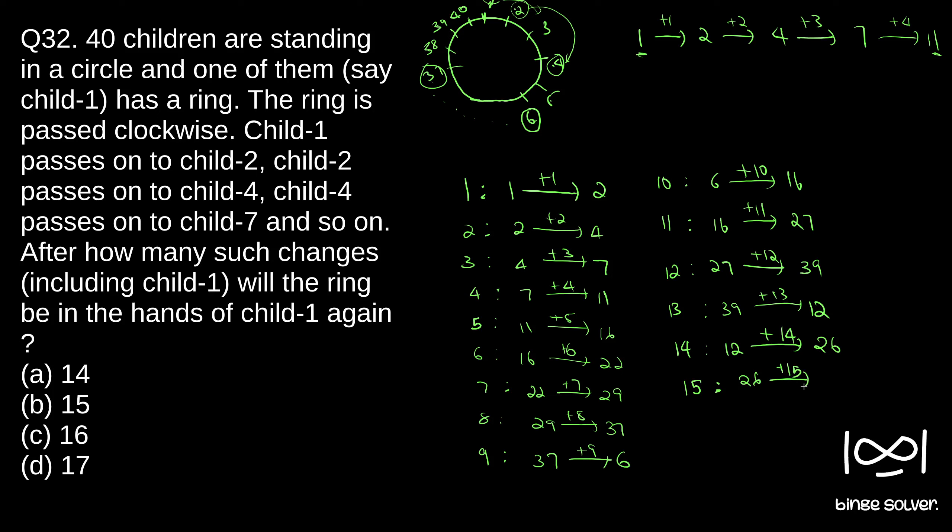So again one is getting the ring. So 15th pass, one gets the ring. So it says including child 1, so 15th pass will be counted. So total, 15 passes it takes for the one to get the ring again. So solution to question 32 is B.